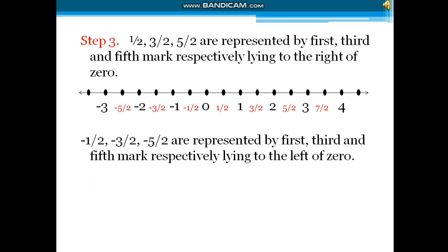Now, step number 3. We have to represent the rational numbers first. 1 by 2, 3 by 2, and 5 by 2 are represented by the first, third, and fifth marks respectively, lying to the right side of 0. We take these on the right side because they have a positive sign.